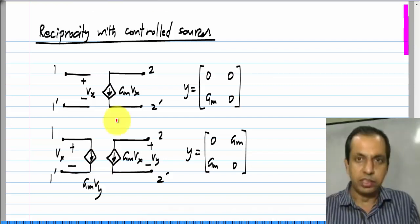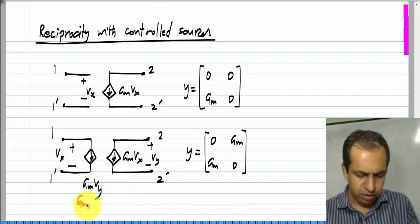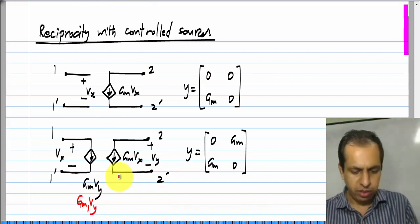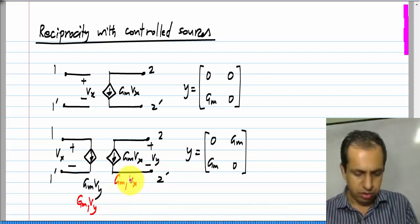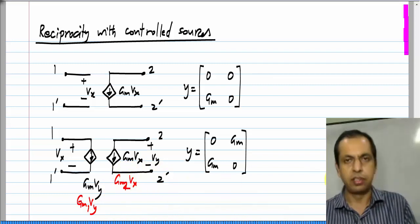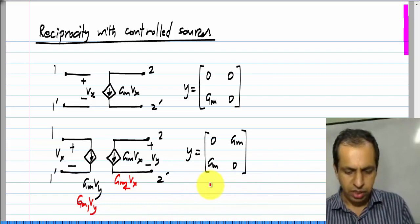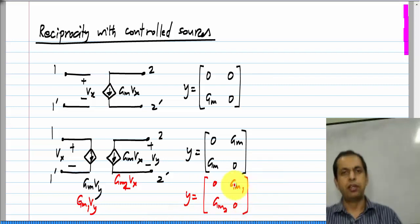In this particular case, let's say instead of Gm*Vy we had Gm1*Vy, and here I had Gm2*Vx. Then the Y parameter set would be [0, Gm1; Gm2, 0], and in that case we do not have reciprocity.